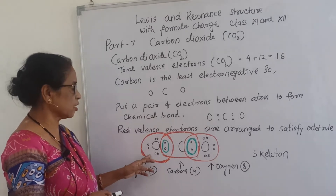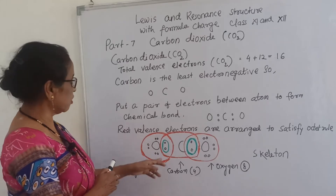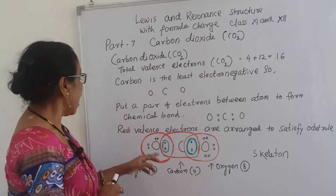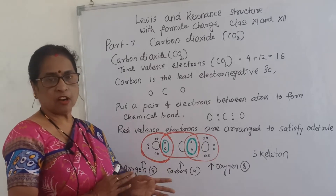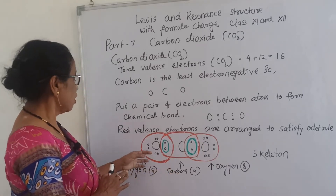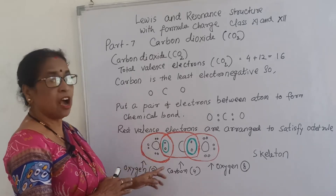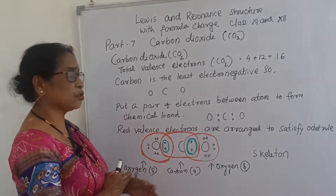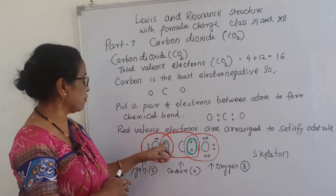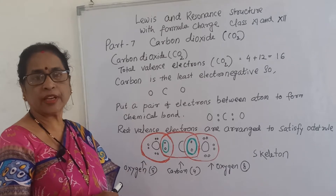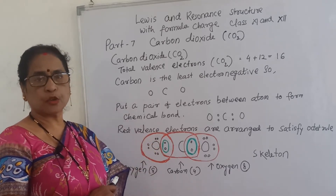For the first oxygen: here also one pair of bonding electrons surrounded in green and three pairs of non-bonding electrons. Checking this oxygen - it also satisfies the octet rule. Three pairs non-bonding, one pair bonding, total four pairs equal to eight electrons. So it is also satisfied octet rule.